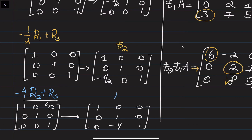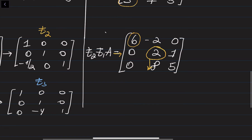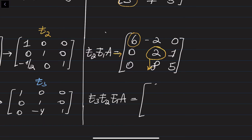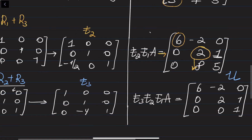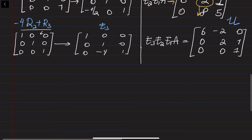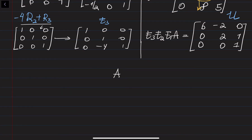Multiplying E3 to E2 to E1 to A gives [[6, -2, 0], [0, 2, 1], [0, 0, 1]]. The 8 is eliminated: 2 times -4 is -8, plus 8 equals 0. And 1 times -4 plus 5 equals 1. This is already in upper triangular form — row echelon form. We obtained U by multiplying A by the three elementary matrices E1, E2, and E3.